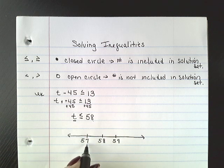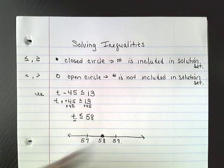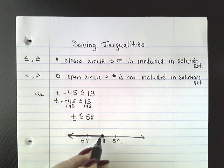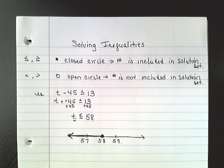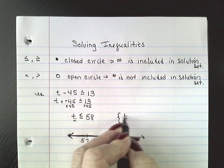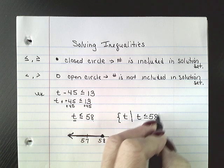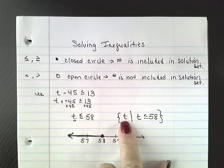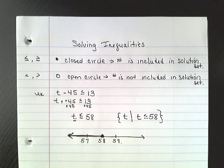Less than 58 — what number is less than 58, 57 or 59? 57. Since it's less than or equal to, it's a closed circle, and then you shade to the left. My symbol points to the left, I'm shading to the left, and that only works if you have the variable first. The set builder notation says: for all values of t, t must be less than or equal to 58, and that would satisfy that inequality.